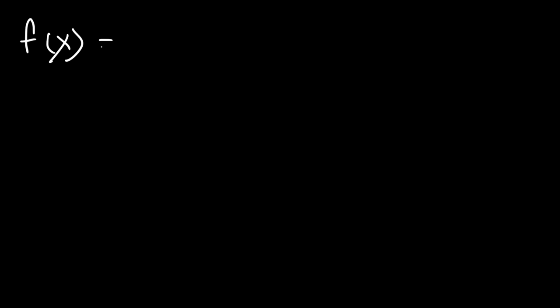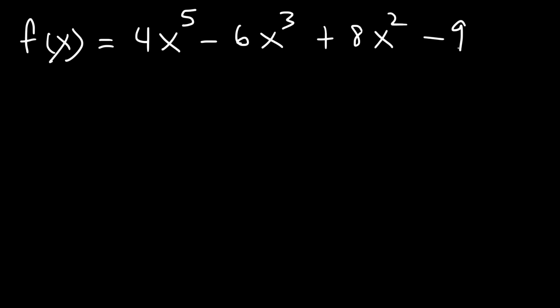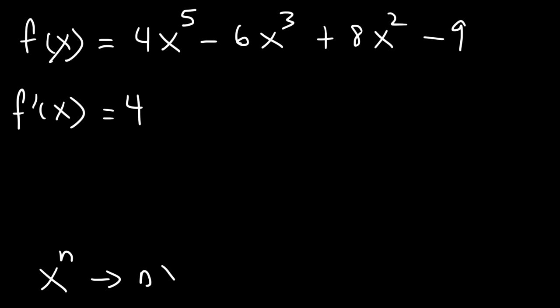Now let's try a similar example. Let's say we have 4x to the 5th power minus 6x cubed plus 8x squared minus 9. Feel free to take a minute and find the first derivative of this function. The derivative of x to the 5th using the power rule — which is nx raised to the n minus 1 — where n is 5, gives us 5x to the 5 minus 1, or 5x to the 4th.